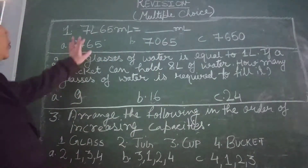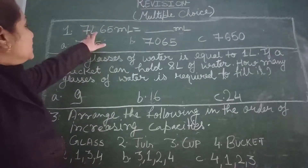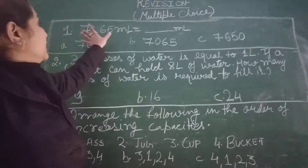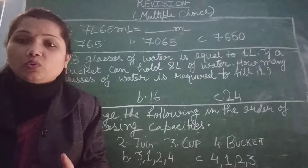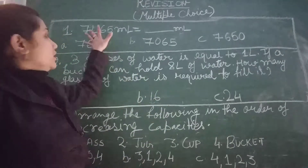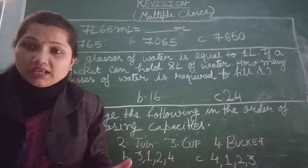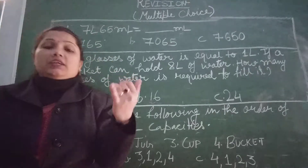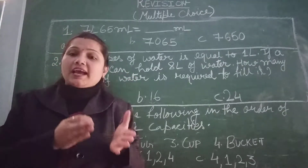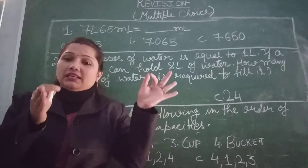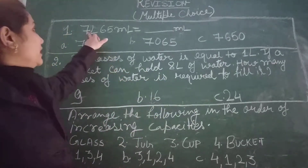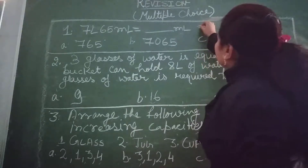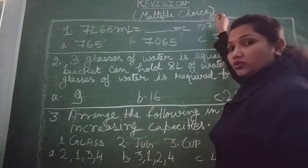Now see the first question. Question number 1: 7 litre 65 millilitre is equal to how much millilitre? The given capacity we will have to convert into millilitre. The question is given in litre and millilitre both, but we will have to convert it totally into millilitre. To convert litres into millilitres, we will have to multiply the given litres by one thousand. When we multiply 7 by one thousand, we will get 7000.